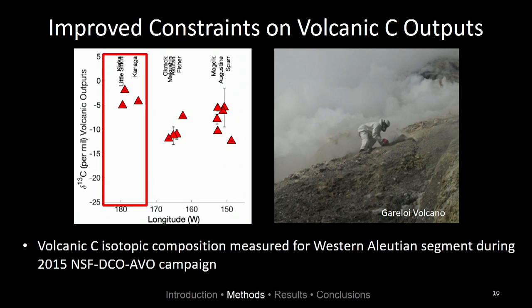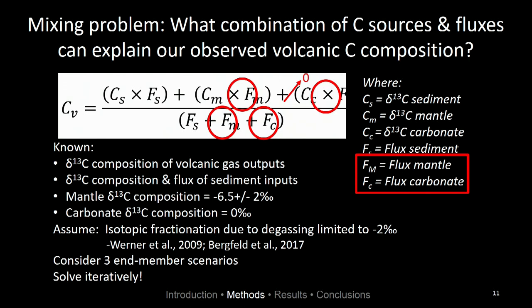The second data set we used were new constraints on volcanic carbon outputs. The figure on the left-hand side shows longitude from east to west and carbon isotopic composition on the y-axis — these are our volcanic gas measurements for the Aleutian arc. Prior to 2015, we only had constraints from the eastern and central arc segments. In 2015, Tobias Fisher and I had the opportunity to join a collaborative campaign out in the western Aleutians, supported by the NSF Geoprisms program, the Deep Carbon Observatory, and the Alaska Volcano Observatory, adding new data to round out our arc measurements. Here's a photo of Tobias taking a sample at Gareloi Volcano.